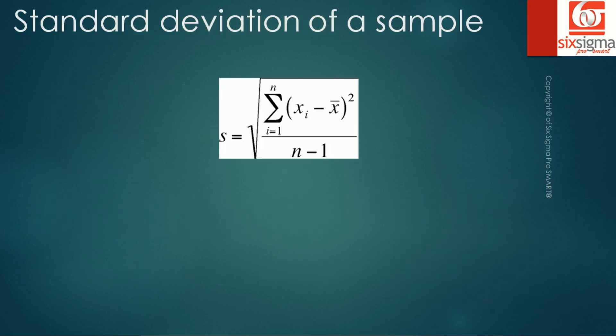If we were to calculate the standard deviation for a sample, we can notice that the formula has following changes. Our sigma gets replaced by s, our mu gets replaced by x bar, and n gets replaced by n minus 1, where n is the sample size. Now it is not in scope to understand why we take n minus 1 here. But for your understanding, it's important to note the difference in the formula.